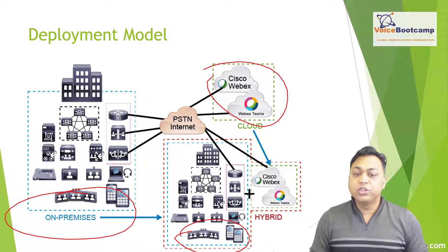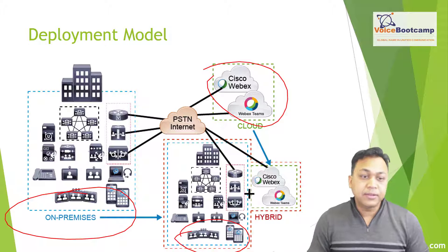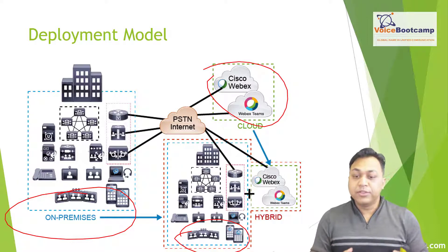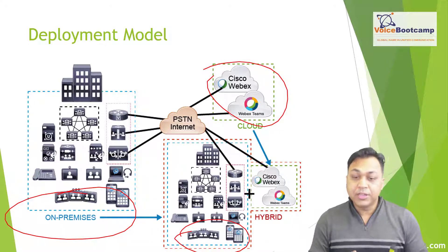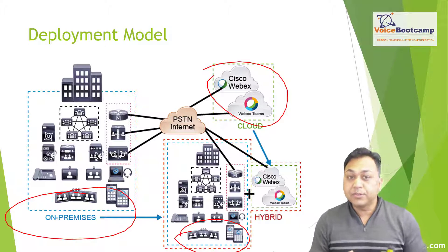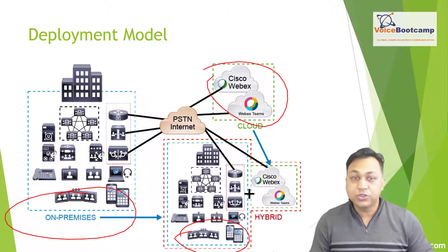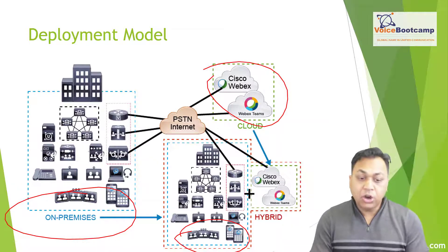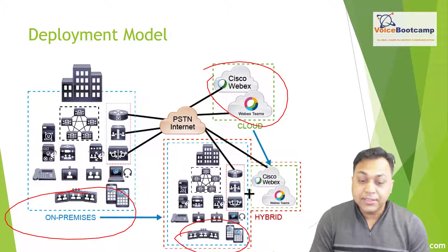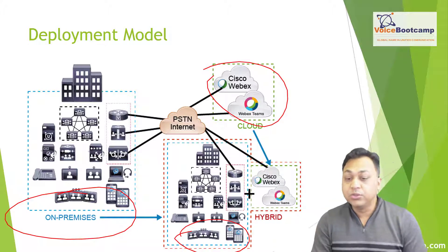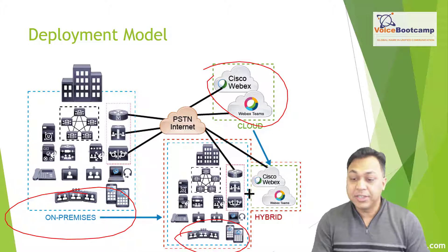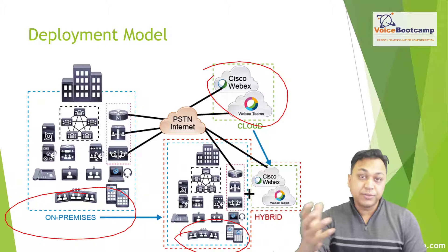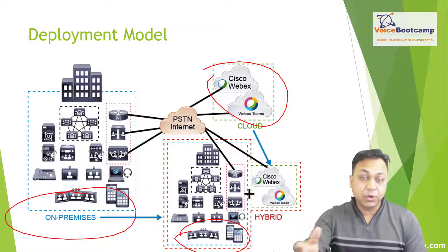Typically when we talk about an environment where everything is on-premise, every single one of the different devices such as endpoints, routers, switches — whatever that may be — are all located in a single location. All of these devices, including the routers and CUBE devices that can be used to route a call, would be controlled 100% by the organization or by the network team.